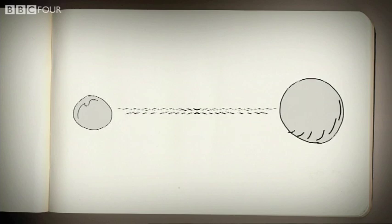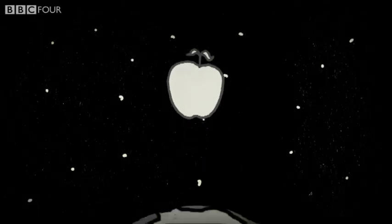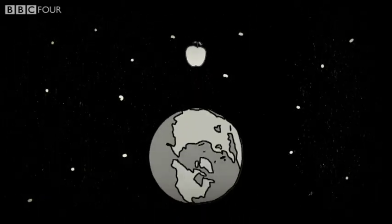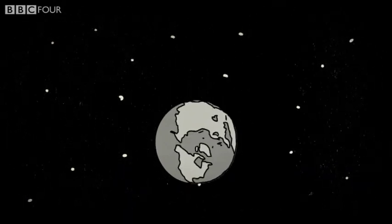The two masses, m1 and m2, could be anything — the Earth and the apple, or the Earth and the moon, or the Earth and the sun.